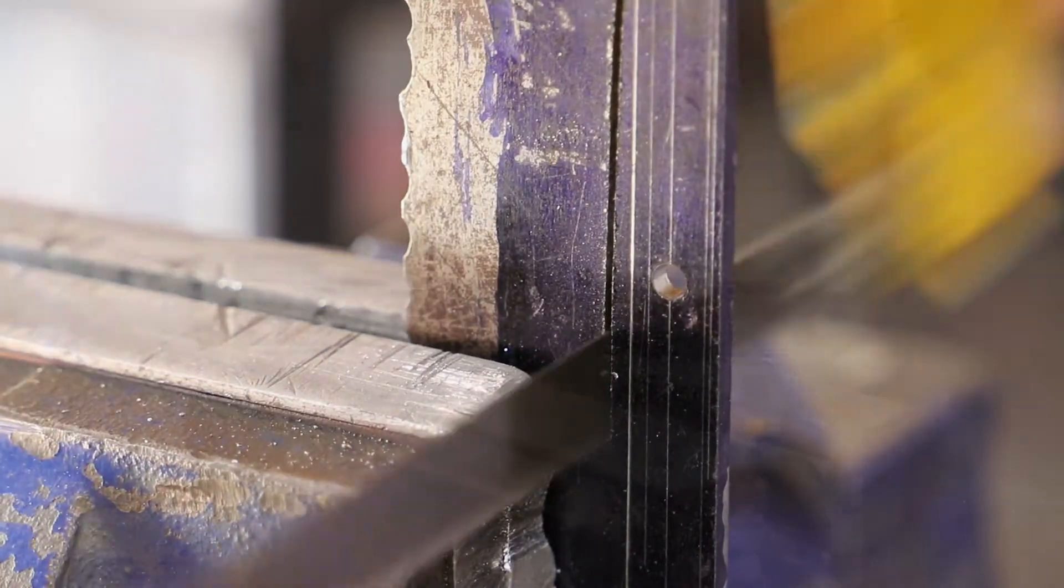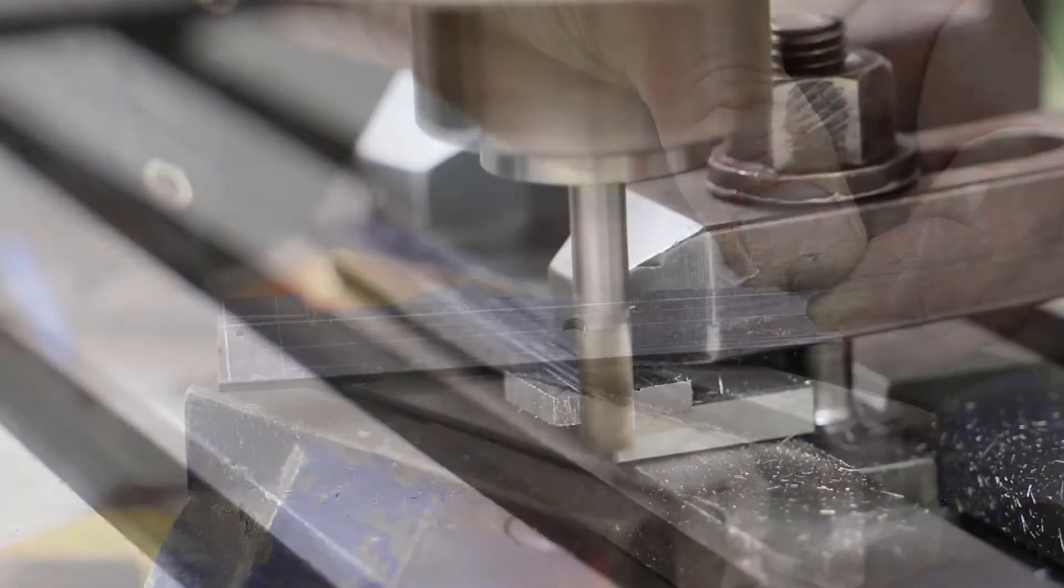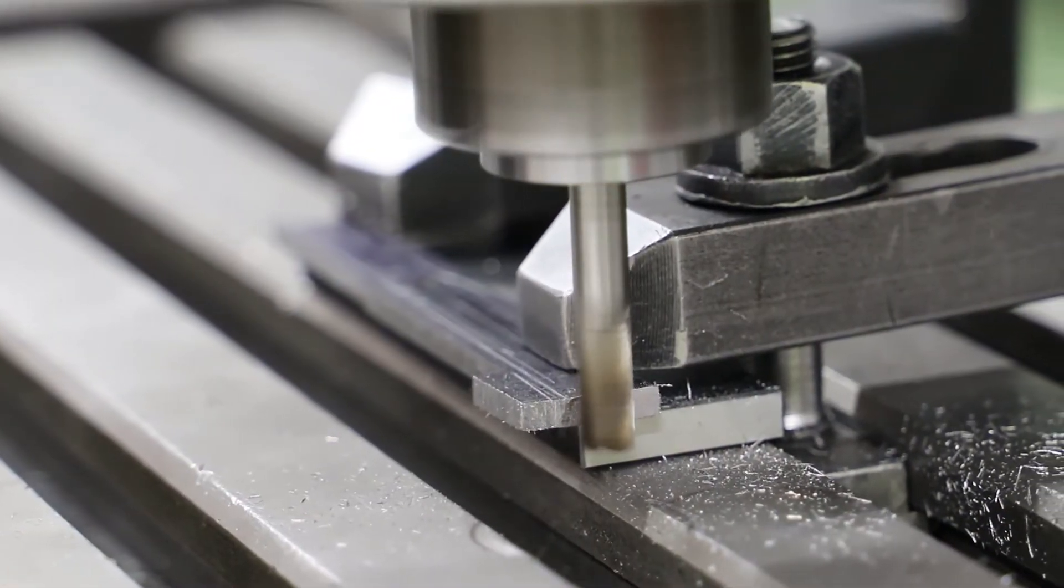Next, it was a bit of work with the hacksaw to rough cut the outline, and although I did consider carrying on with the file, I referred back to my normal process of clamping the workpiece onto the milling table and using the end mill to do the finishing.